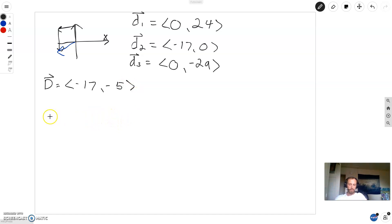So to get the distance, all we do is take the magnitude, take the magnitude of our final displacement vector, and that will be 17 squared plus 5 squared. You can work out whatever that happens to be.